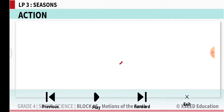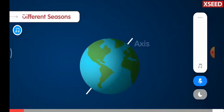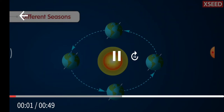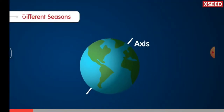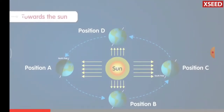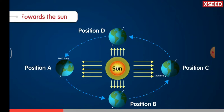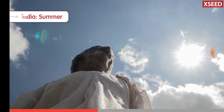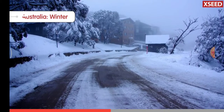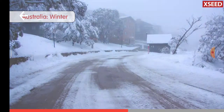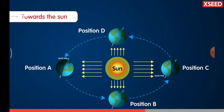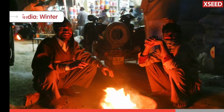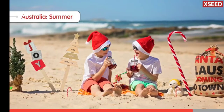Now let us watch this video of the earth and its tilted axis. The revolution of the earth and its tilted axis causes the seasons. When the north pole is tilted towards the sun, India experiences summer and Australia experiences winter. When the south pole is tilted towards the sun, India experiences winter and Australia experiences summer.